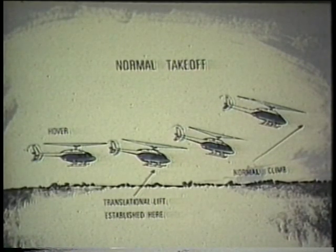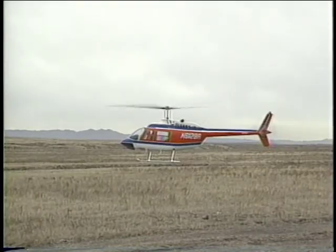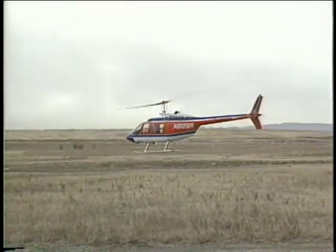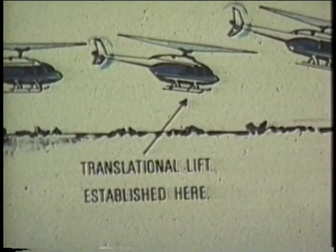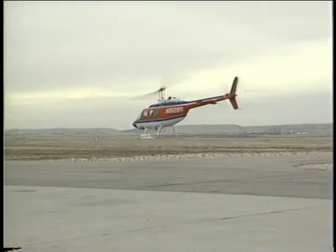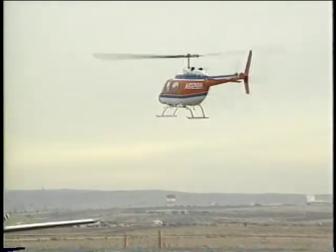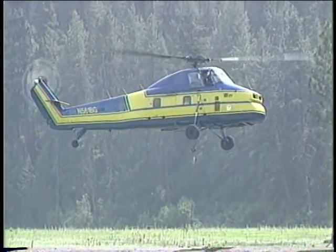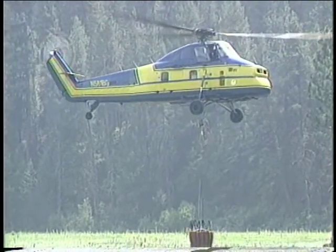A normal takeoff consists of bringing the helicopter up to an in-ground-effect hover and translating the helicopter into forward flight. Additional lift is created as the helicopter moves from the turbulent air created from hovering to undisturbed or clean air in forward flight. This is called translational lift. Translational lift occurs at about 15 to 18 miles per hour.